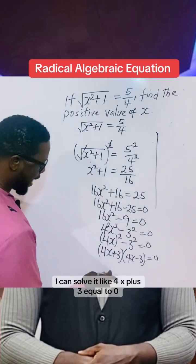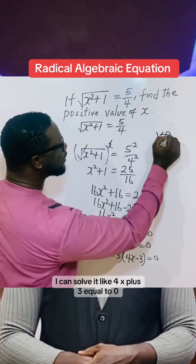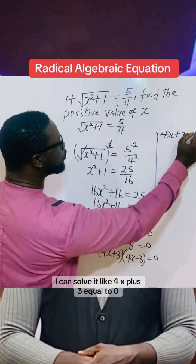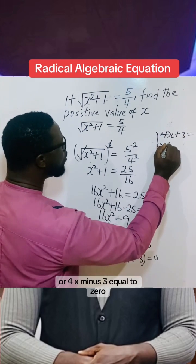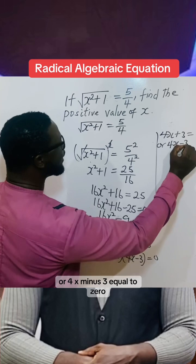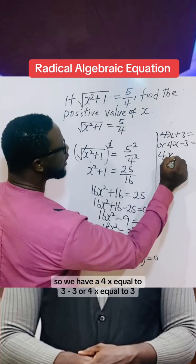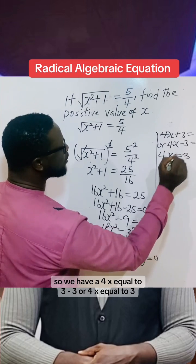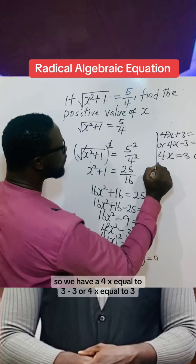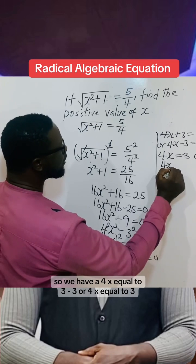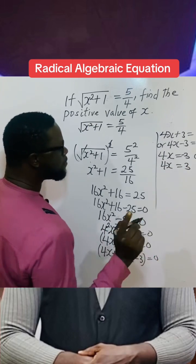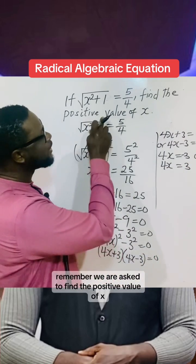So quickly, I can solve it like 4x + 3 = 0 or 4x - 3 = 0. So we have 4x = -3 or 4x = 3. Remember, we are asked to find the positive value.